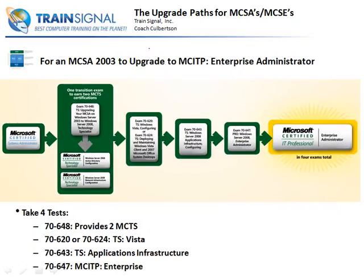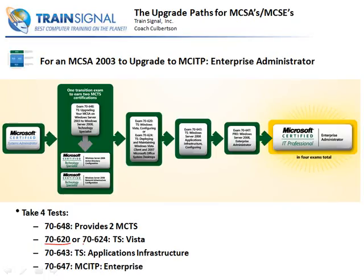If you are an MCSA 2003 and you want to get the Enterprise Administrator — let's say you want to jump all the way up to the enterprise level — you need to take 648, which provides those two MCTSs. You also need to take the Vista exam. For the Enterprise Administrator, whether upgrading or not, you could also take 7624, which is deploying Vista. Then you'll need to take 643 and then 647. So if you're already an MCSA 2003, you really get to skip one test.